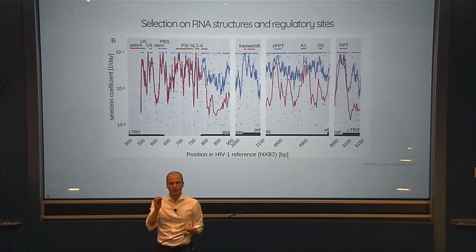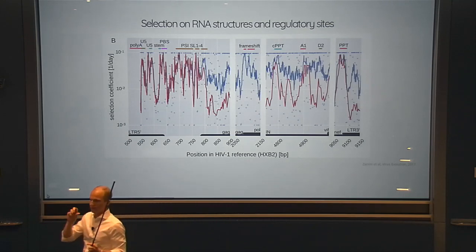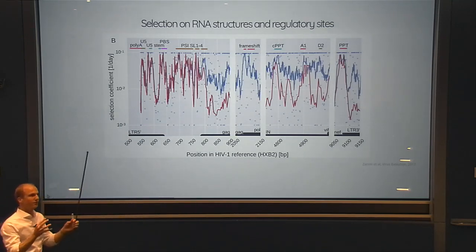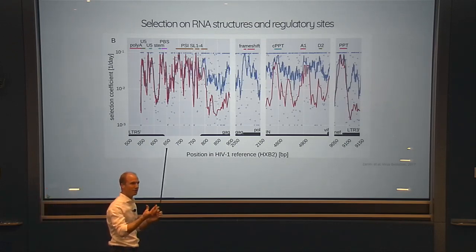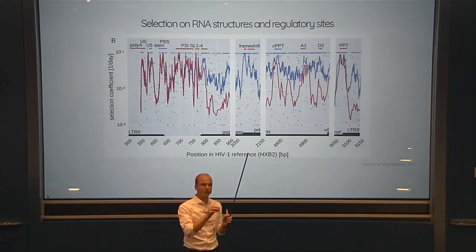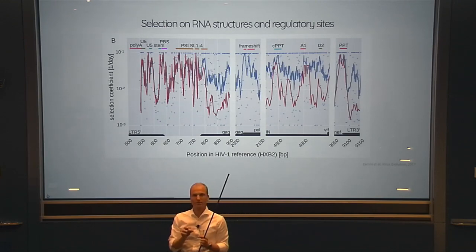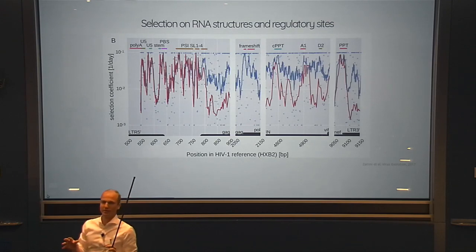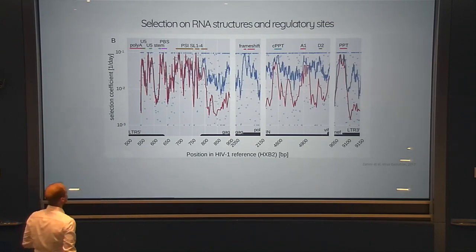This fitness landscape gives you a window into how much it costs to mutate a particular site in the real in vivo system — not measured in cell culture, but reflecting the cost of mutating parts of the genome as the virus replicates in the human body.